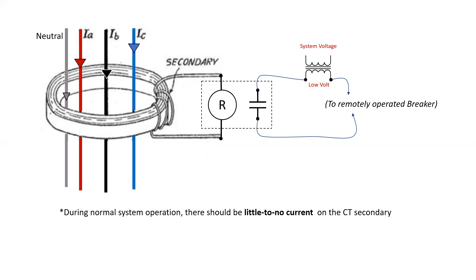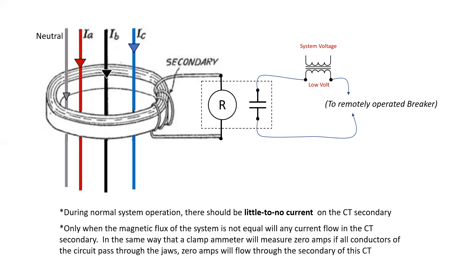During normal operation, there should be little to no current on the CT secondary. Only when the magnetic flux of the system is not equal or zero will any current flow in the CT secondary. In the same way that a clamp ammeter will measure zero amps when all the conductors of the circuit pass through the jaws, zero amps will flow through the secondary of the CT.